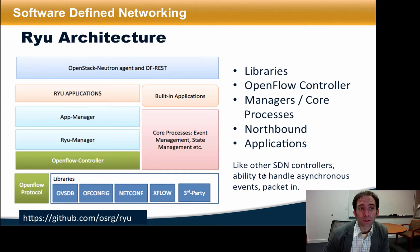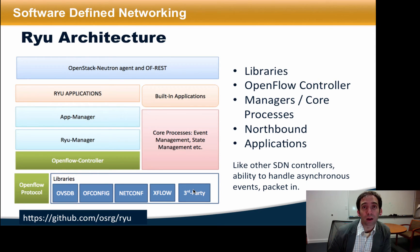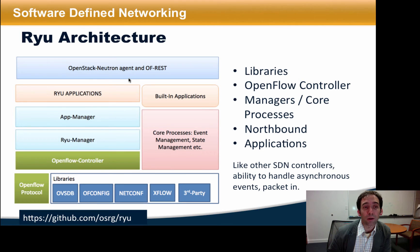Here's an overview of the Ryu architecture. At the very bottom of the picture, you can see we have a bunch of libraries that allows the Ryu controller to interface with switches via various southbound interfaces. We have an OpenFlow controller, a Ryu manager, and an app manager that sit on top of that. On top of that, we have applications and other northbound APIs such as REST and OpenStack Neutron. Ryu can also speak to switches natively via the OpenFlow controller.